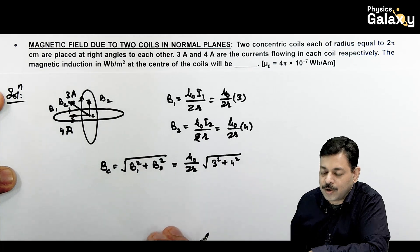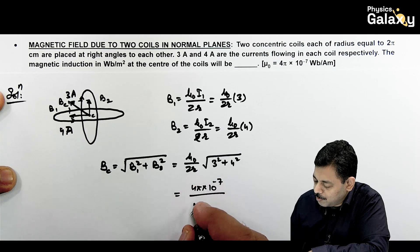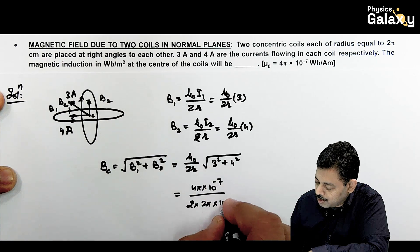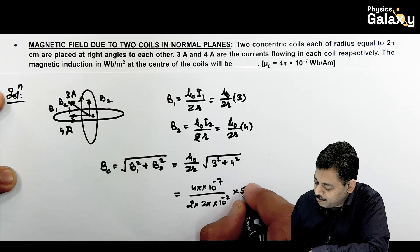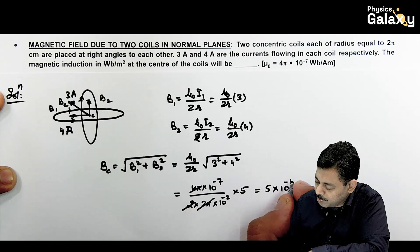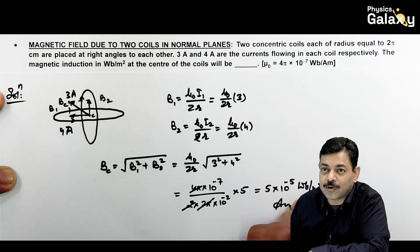If we substitute the values: mu naught is 4 pi times 10 to power minus 7, divided by 2 times r which is 2 pi times 10 to power minus 2, multiplied by 5. Here 4 pi gets cancelled out. This comes out to be 5 times 10 to power minus 5 weber per meter square. That is the magnetic field and the answer.